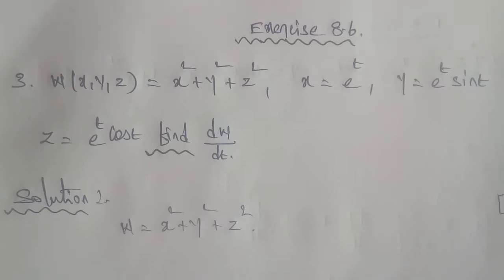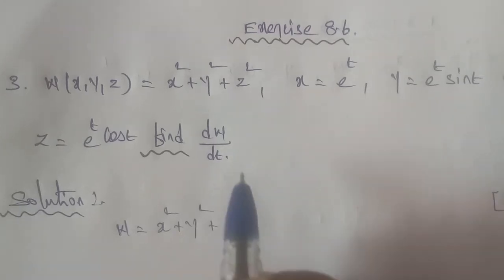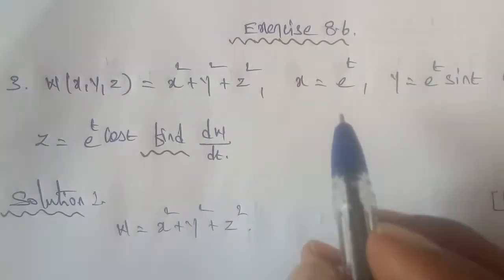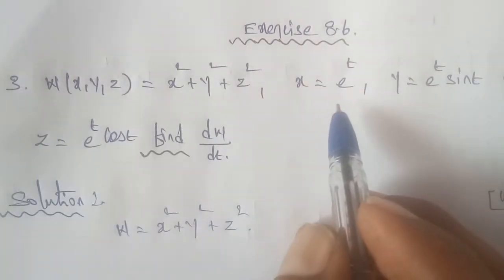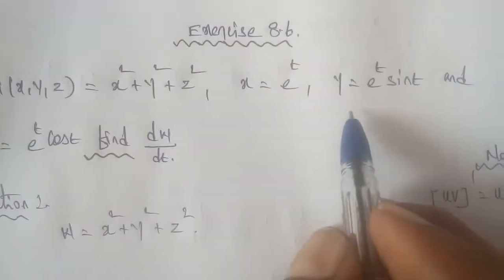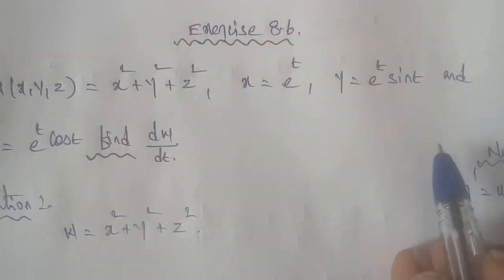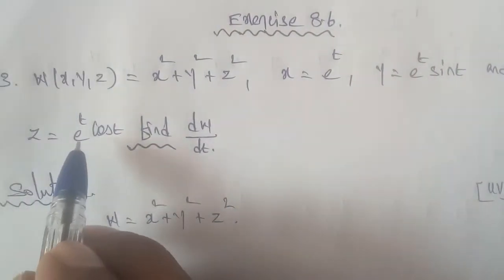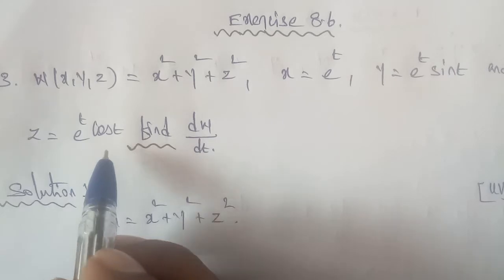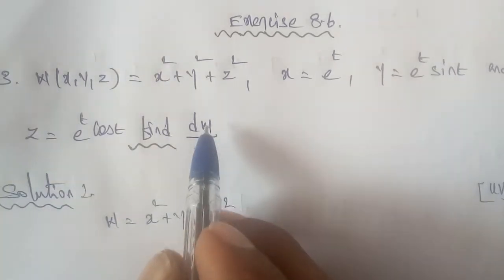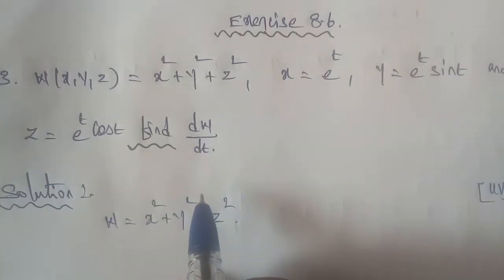Exercise 8.6, question number 3. Given: w(x, y, z) = x² + y² + z², where x = eᵗ, y = eᵗ sin t, and z = eᵗ cos t. Find dw/dt.